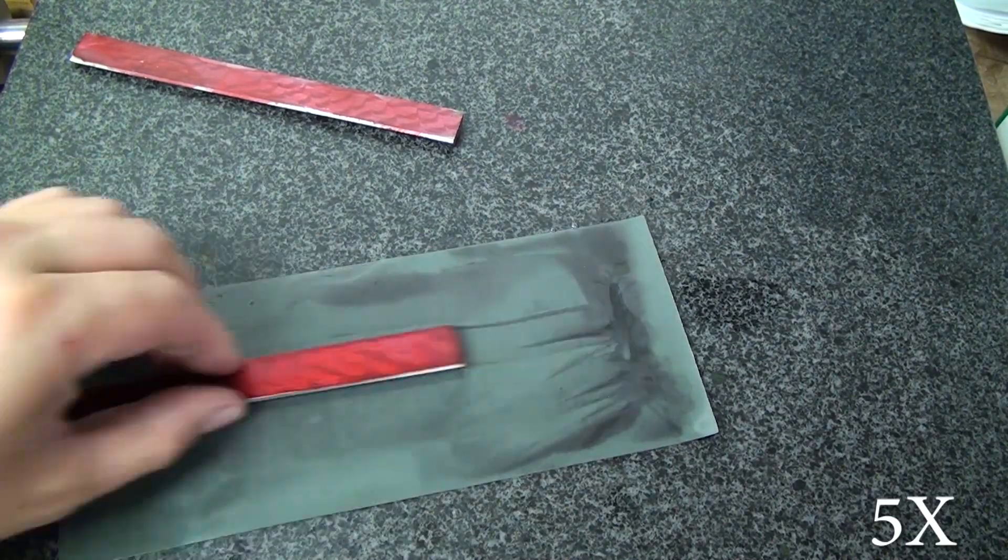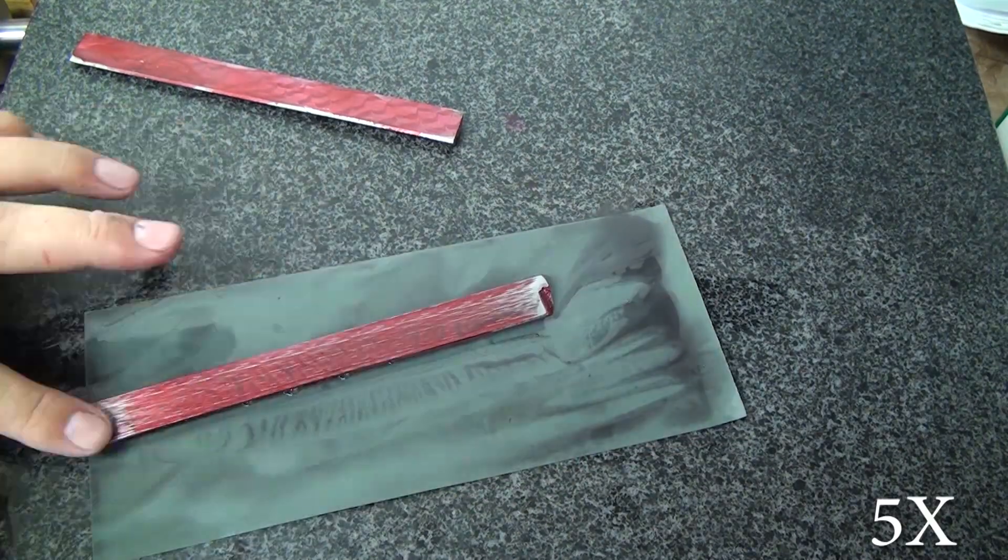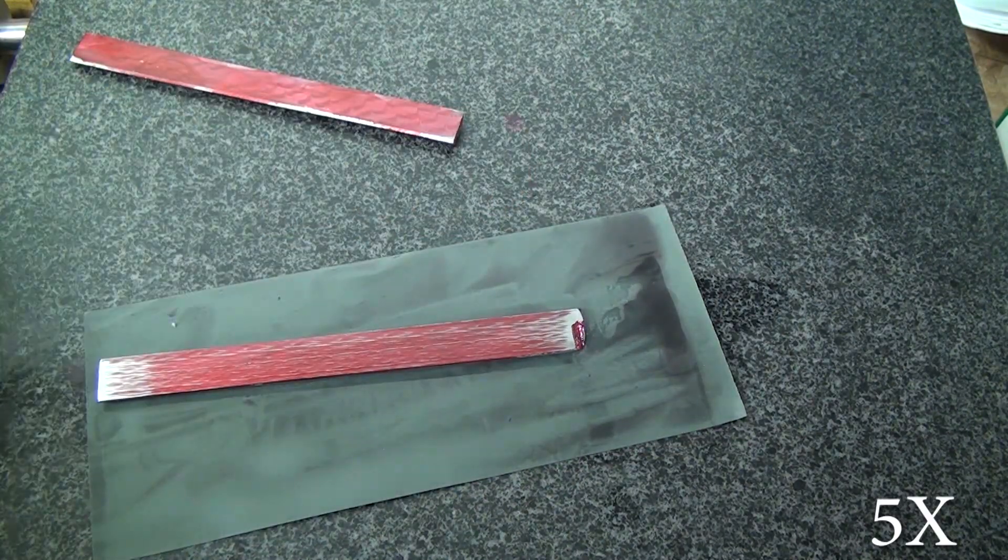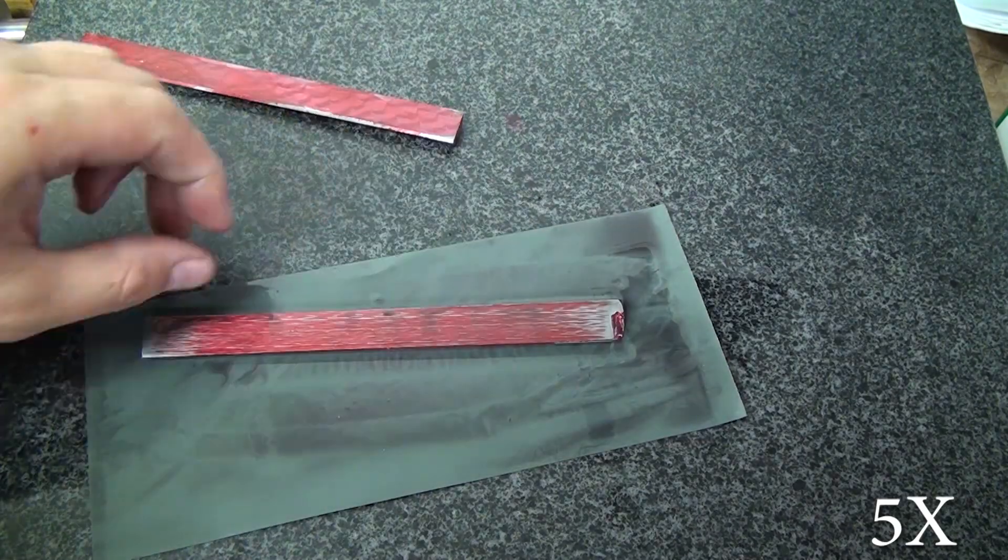The way that I discovered how flat or not flat they were was to coat them with Dykem, and then with 2000 wet dry sandpaper, sand the Dykem back off.